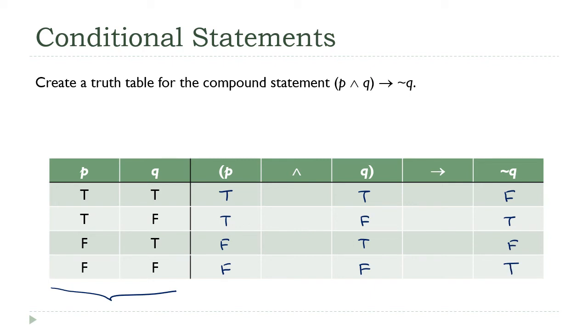Now I can start filling things in. Parentheses first, just like always. I'm going to do this and. Remember, an and is only true when both of the inputs are true, and that only happens here on the first row. So I'm going to have true, false, false, false. And that is the simplified version of this whole statement. This whole statement condensed down to this one column.